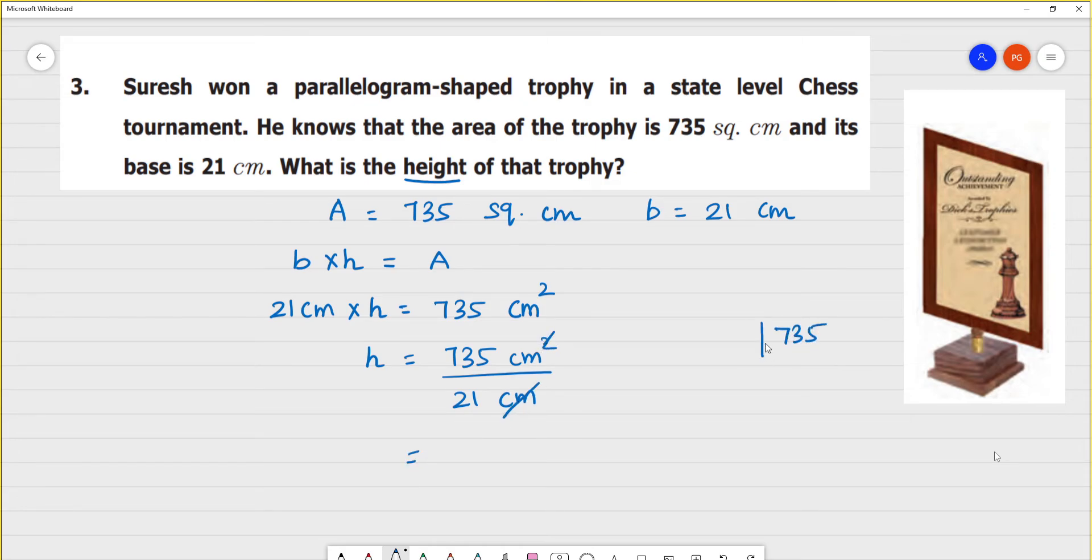735 divided by 21. So, 3 times... 3, 1, 3 is 3, 6, 63. So, 1, 0, 5. So 1, 0, 5, 1 is 5, 5, 2, 3, 1, 0, 5.